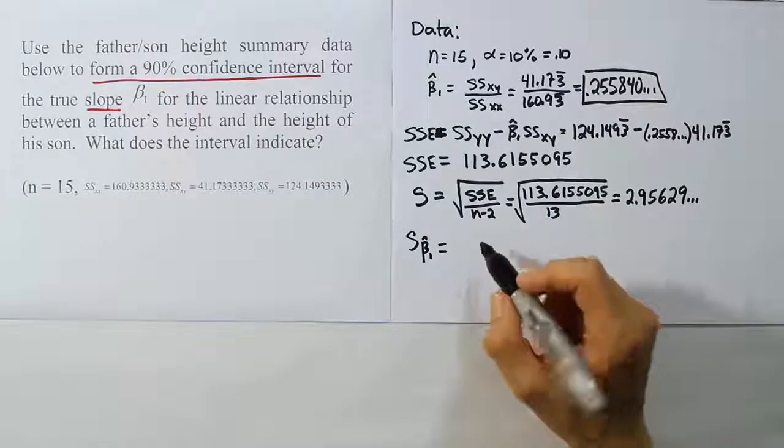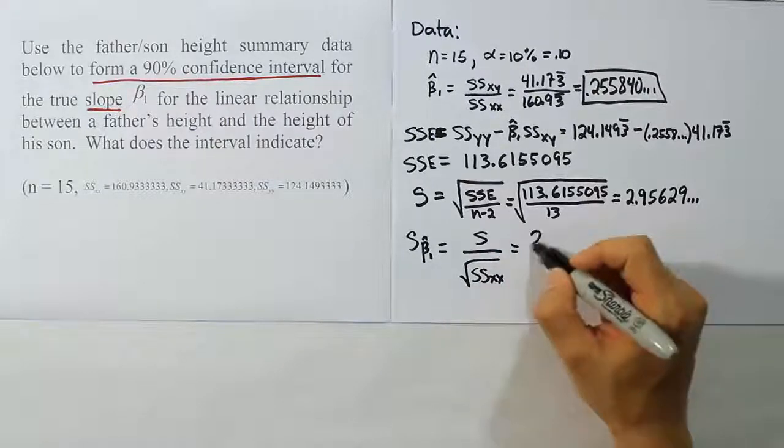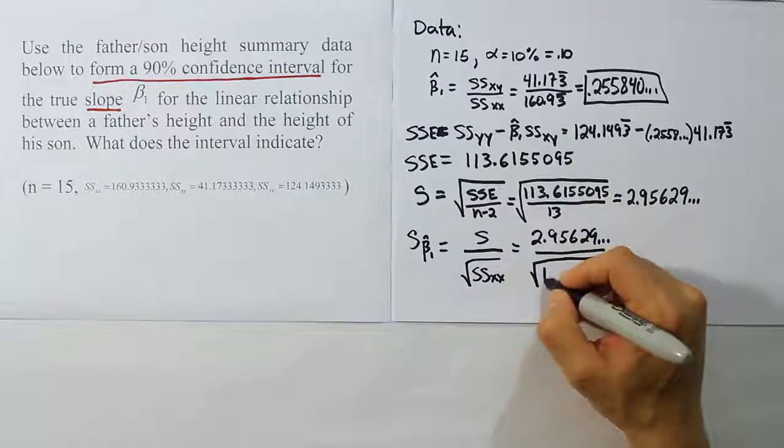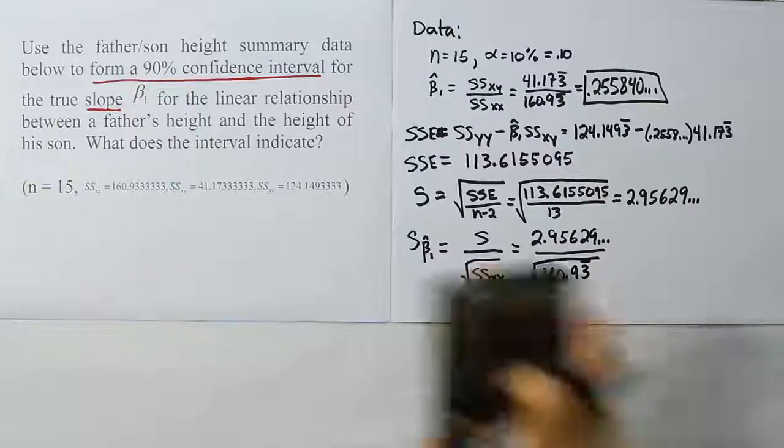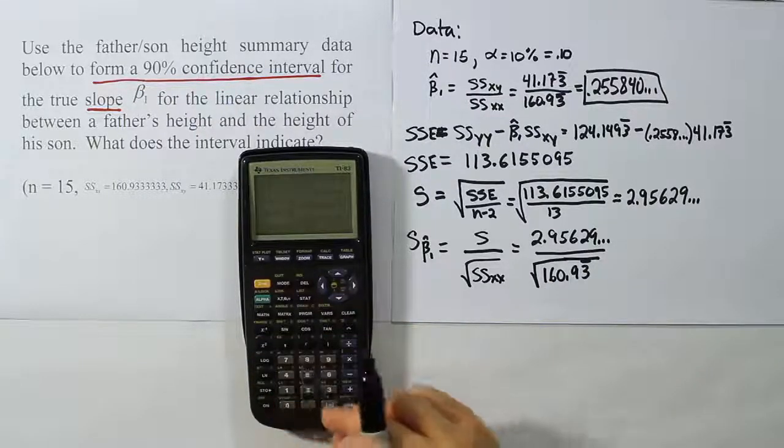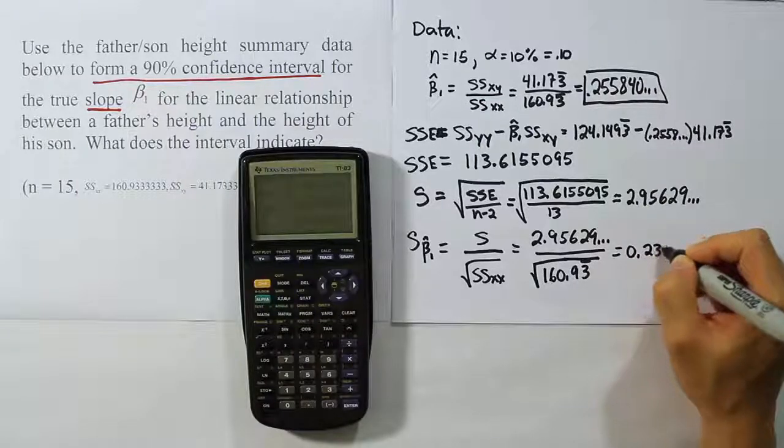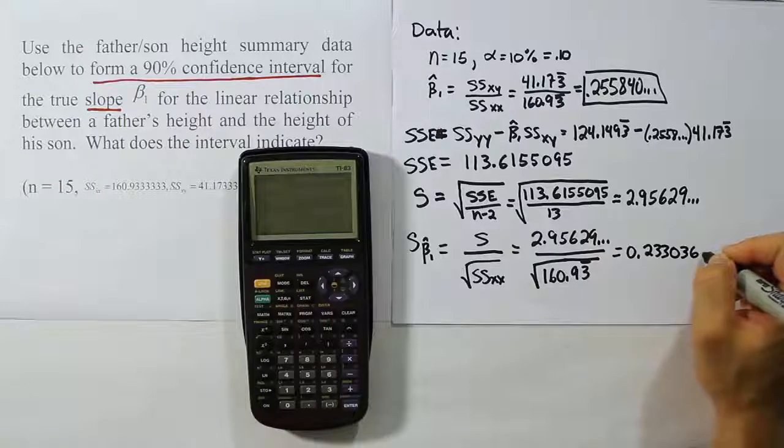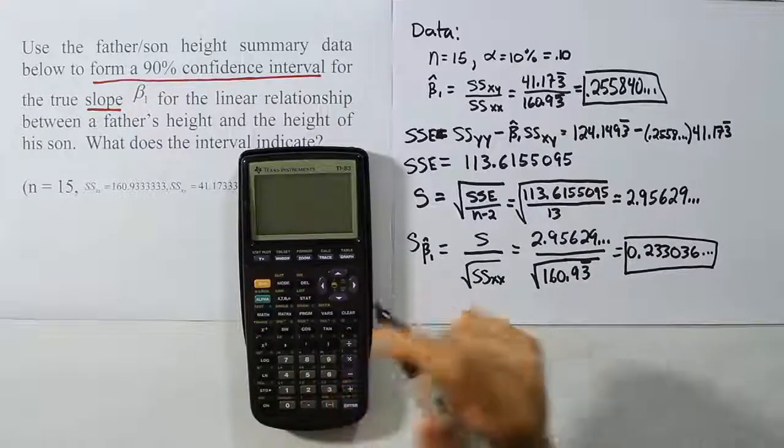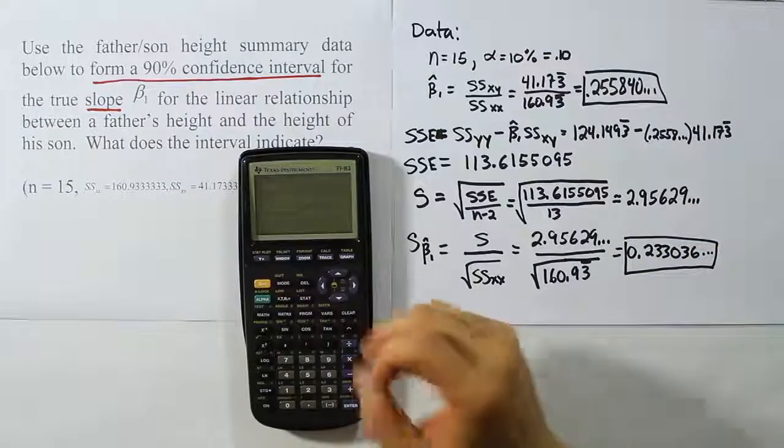So standard error for beta 1 hat is my next and final step in the data process. I'll divide S by the square root of SSXX. And in this case, that's going to be 2.95629 dot dot dot divided by the square root of the SXX value, which is 160.93 repeating. Let's see what that gives me when I do that. I already have that S value still sitting in my calculator. So I'm going to divide that by the square root of 160.933333. Close the parentheses up, hit enter, and it's going to give me 0.233036 dot dot dot. Now I'm going to store that in my calculator under the variable S. This way I have my beta 1 hat under B and my standard error for beta 1 hat under S. Those are the two important quantities we need for the next steps of the problem. So the data step is done.